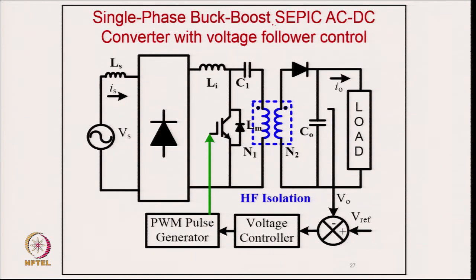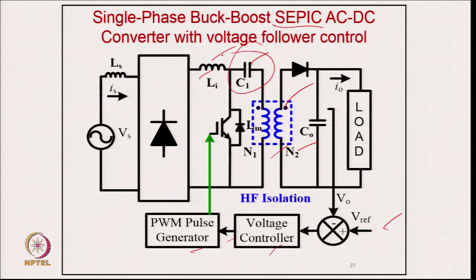The single-ended primary inductance (SEPIC) converter with voltage follower approach can be designed with discontinuous current in the magnetizing inductance, input inductor, or capacitor. We normally prefer minimum discontinuous current in the magnetizing inductance. The control uses a reference voltage, feedback, voltage controller, and PWM pulse generator comparing the controller output with a sawtooth to give gating signals. If the capacitor is designed with discontinuous voltage, the voltage stress on devices and diodes increases significantly since the device voltage is already the sum of input and output voltage.